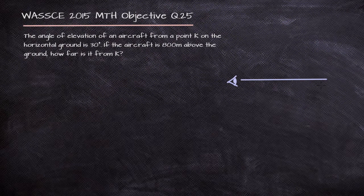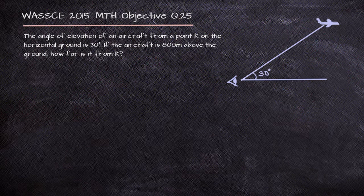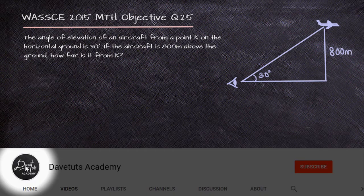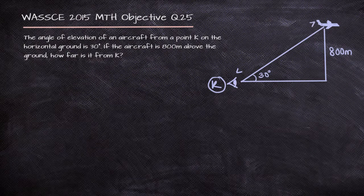On the horizontal level, the eye can be looking straight. But we are talking about an angle of elevation of 30, used to look at an airplane that is 800 meters above the ground level. This angle of elevation is 30. The aircraft itself is 800 meters above the ground. What we want to find is the distance between the observer and the airplane — how far is point K from the airplane?